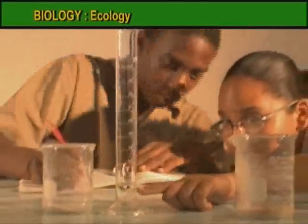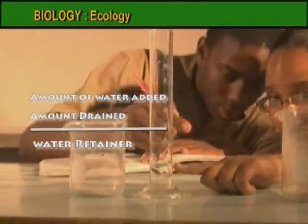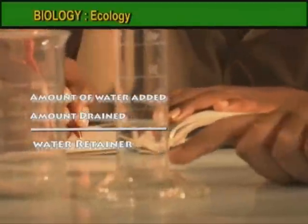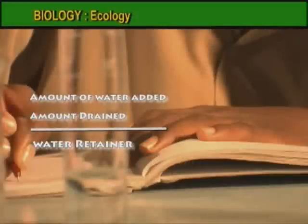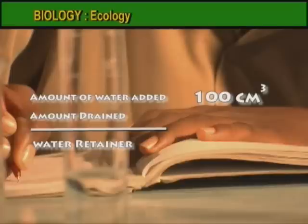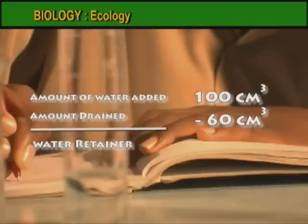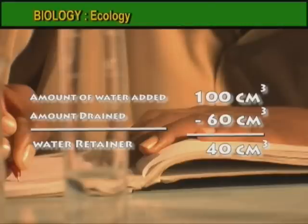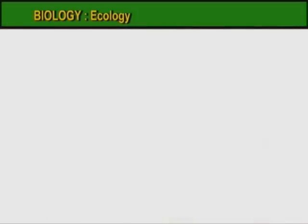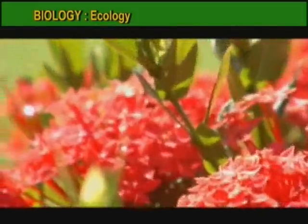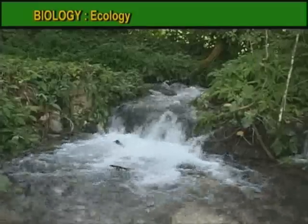Record the volume of water that drained through, then subtract that from the volume added to find the amount retained. For example, if you poured 100 cm³ of water into the soil and 60 cm³ drained through, then the amount retained would be 100 minus 60, equaling 40 cm³. Since soil contains these different components, it provides plants with nutrients, air, and water for growth.